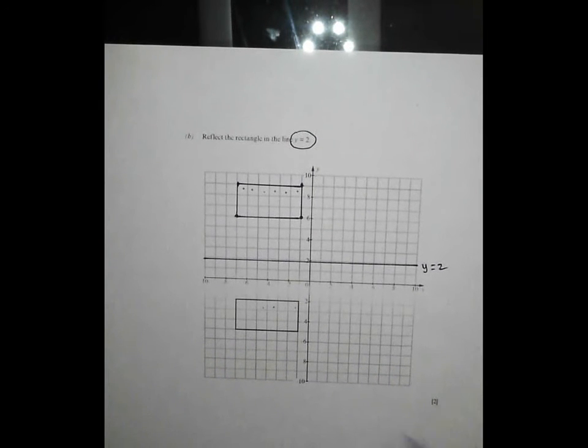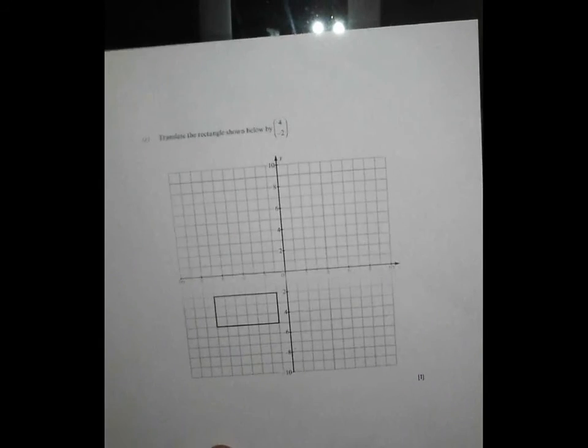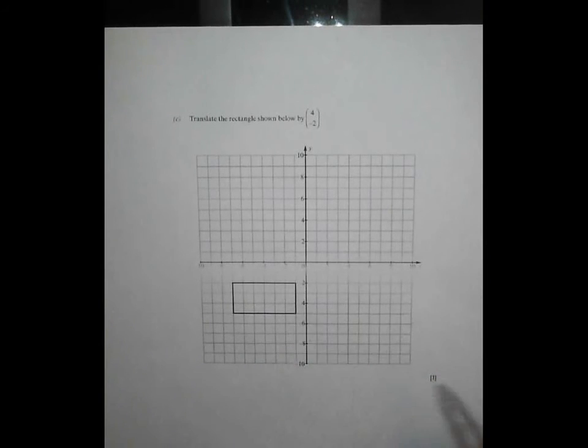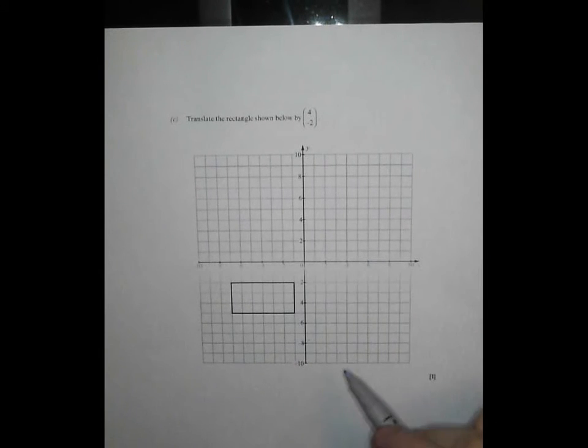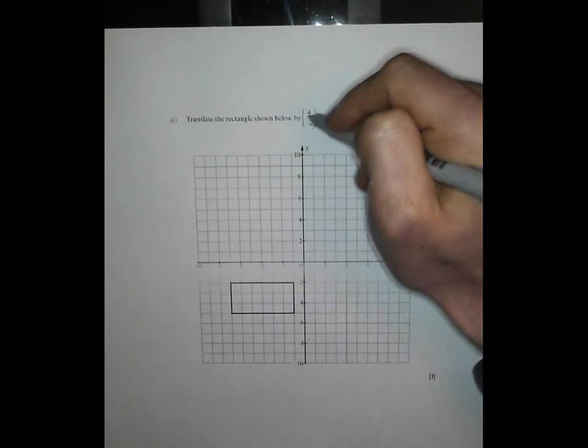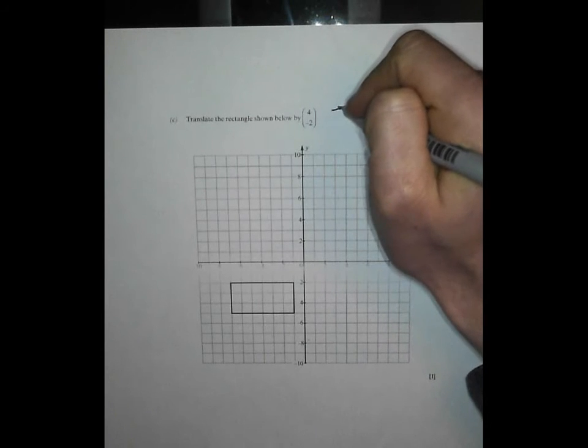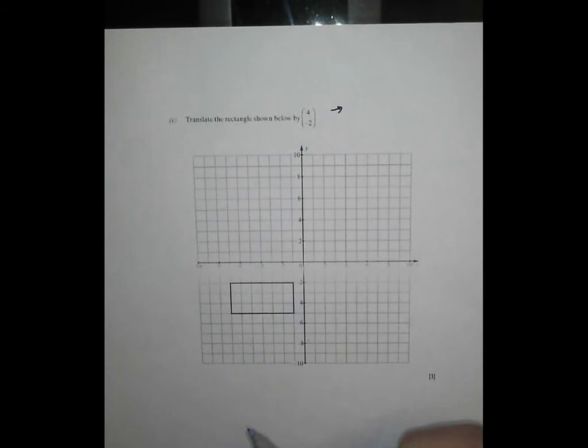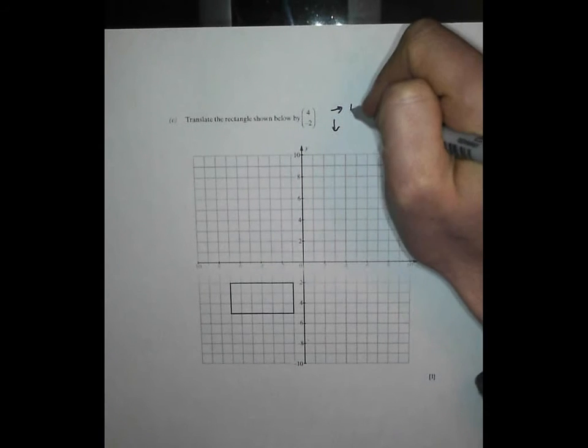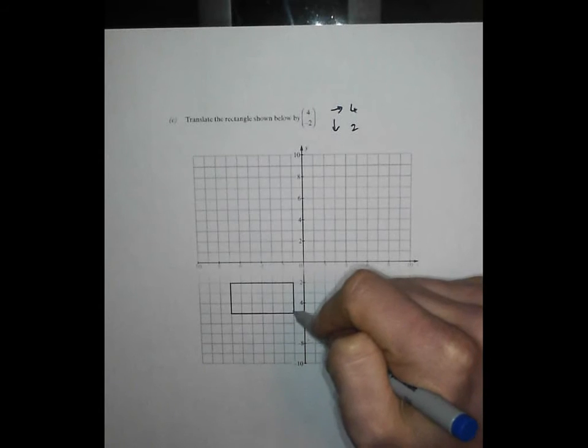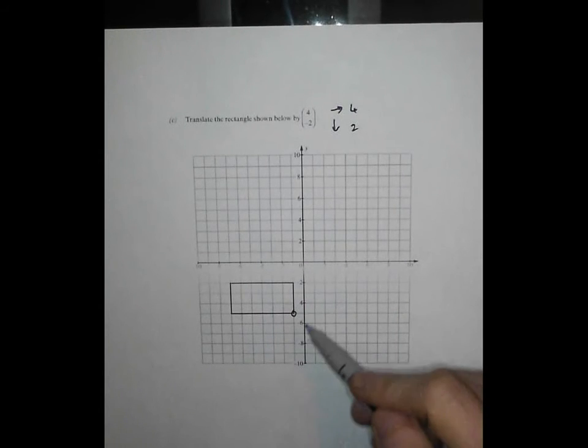What's next in this fun four parter? Well, we've got a little bit of translation. Translate the rectangle below by four minus two. Now, again, if you don't know what that vector means, you're in trouble there. Your top number tells you how far right or left you've got to go. And if it's positive, you've got to go right. The bottom number tells you how far up and down you've got to go. And this is a negative two. So we've got to go down. So we're going right four and two down. Pick a point and figure out where it goes. So it's got to go right four. So that's one, two, three, four, and down two. One, two. And just mark on where your new point goes.